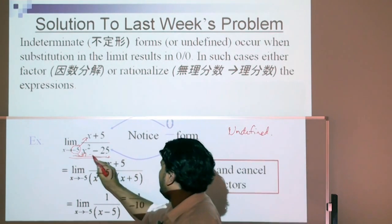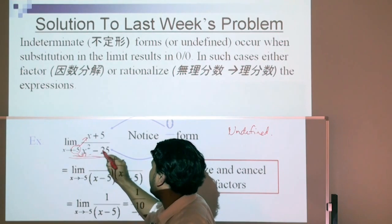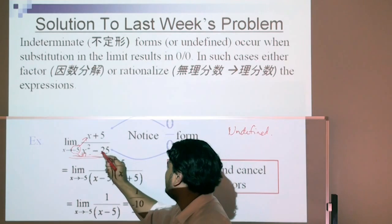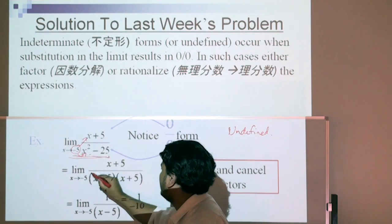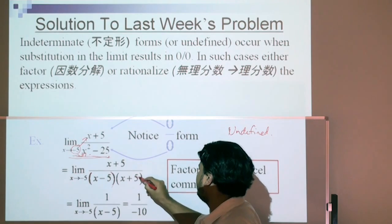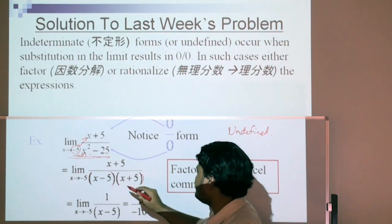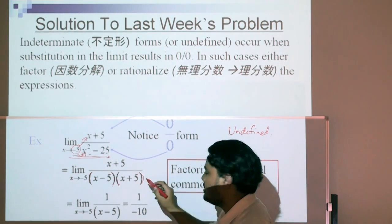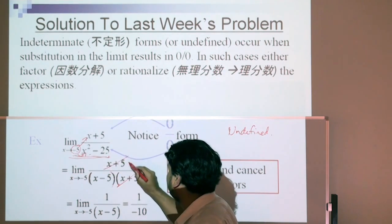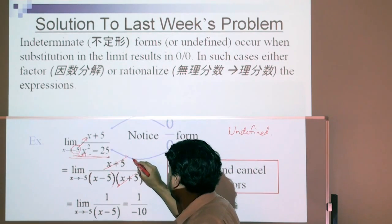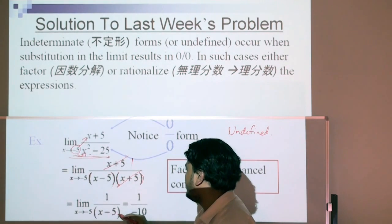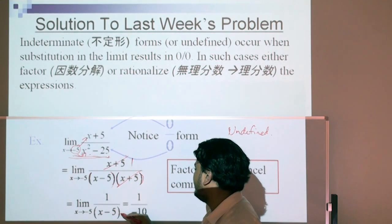What we do here is we factorize x squared take away 25. The perfect square, most of you should know, x squared take away 25 is equal to x minus 5 multiplied by x plus 5. When we have it in this form, we can cancel that x plus 5 on the top in the numerator. That becomes 1.